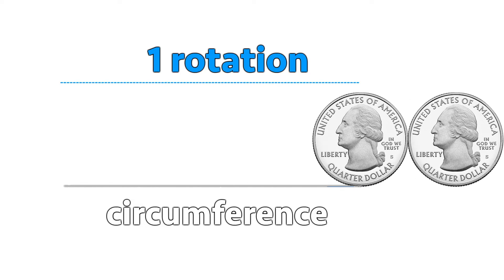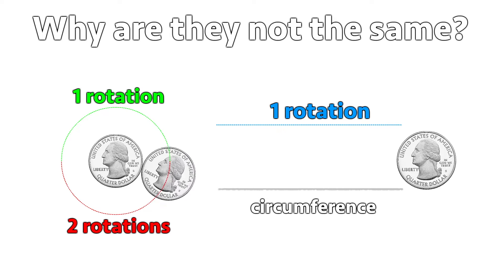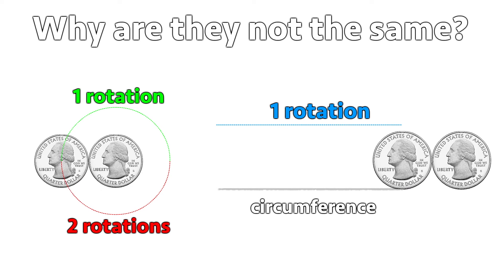He highlights that if we laid out the circumference in a straight line the coin would only rotate once. But it rotates twice if the path is circular. Why are they not the same?